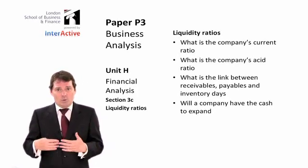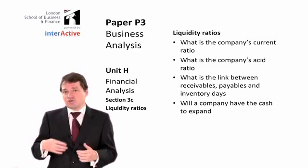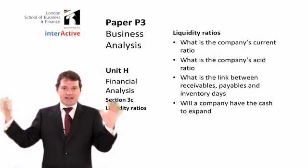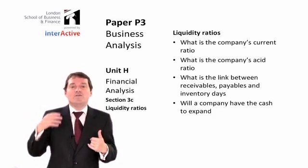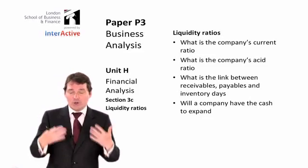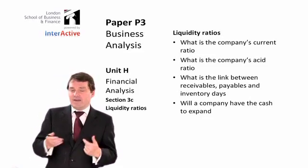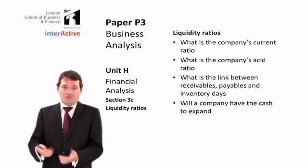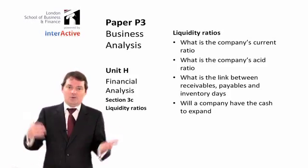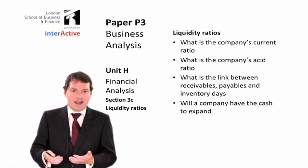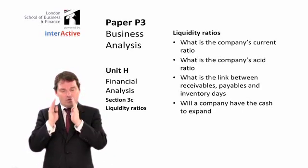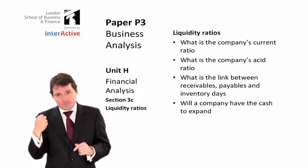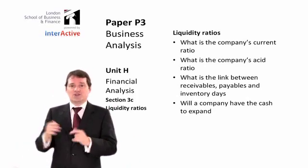For example, if I were to say to you that a company has a receivables day of 103, you might well be horrified and say that's terrible — it takes 103 days for the company to collect money from people who owe it. But if I then say the payables days is 167 — in other words, we get 167 days before we have to pay anybody — well, now that 103 doesn't actually look that bad. On their own, they're not that useful. You ought to look at receivables and payables days together. As long as we're getting the money quicker than we have to pay it, there isn't that much of a problem.